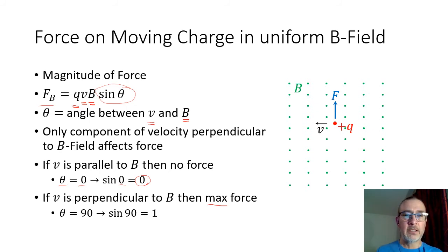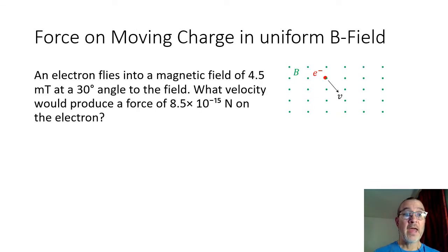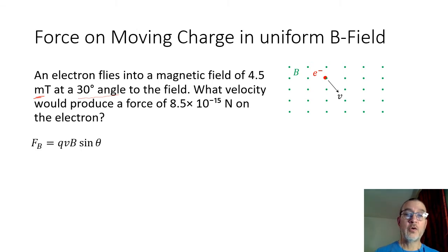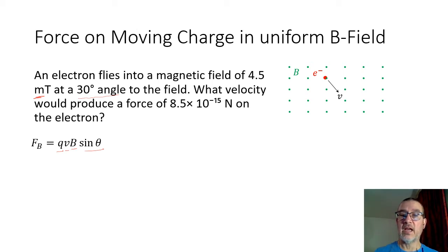In many examples it'll be perpendicular. If you do have an angle, you've got to figure out the angle between the velocity and the magnetic field. Let's do an example problem. An electron flies into a magnetic field of 4.5 mT — milli-Tesla, or 4.5 × 10⁻³ Tesla — at a 30-degree angle to the field. What velocity would produce a force of 8.5 × 10⁻¹⁵ newtons on the electron? The equation is F_B = qvB sinθ. Since we're looking for the velocity, we divide everything by qB sinθ, getting v = F_B / (qB sinθ).